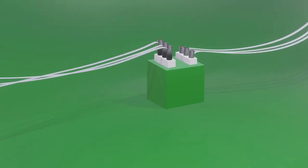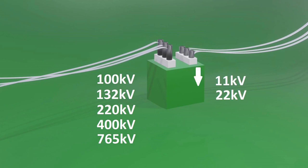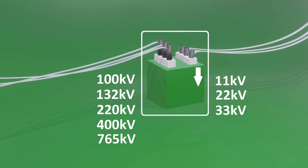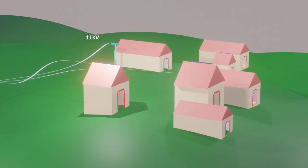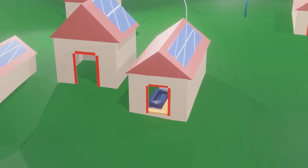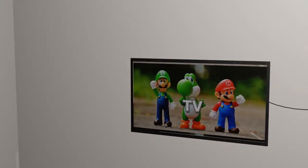At consumer regions, this extra high voltage — 100 kV, 132 kV, 220 kV, 400 kV, and 765 kV — is stepped down to 11 kV, 22 kV, and 33 kV using power transformers at substations. This stepped-down power is brought near the consumer areas. At the consumer end, this 11 kV, 22 kV, and 33 kV level is again stepped down to 440 volts using distribution transformers. Finally, this 440 volts 3-phase power is distributed to homes in a single-phase format, of which the voltage is 230 volts. This 230 volts of power is used in our homes.